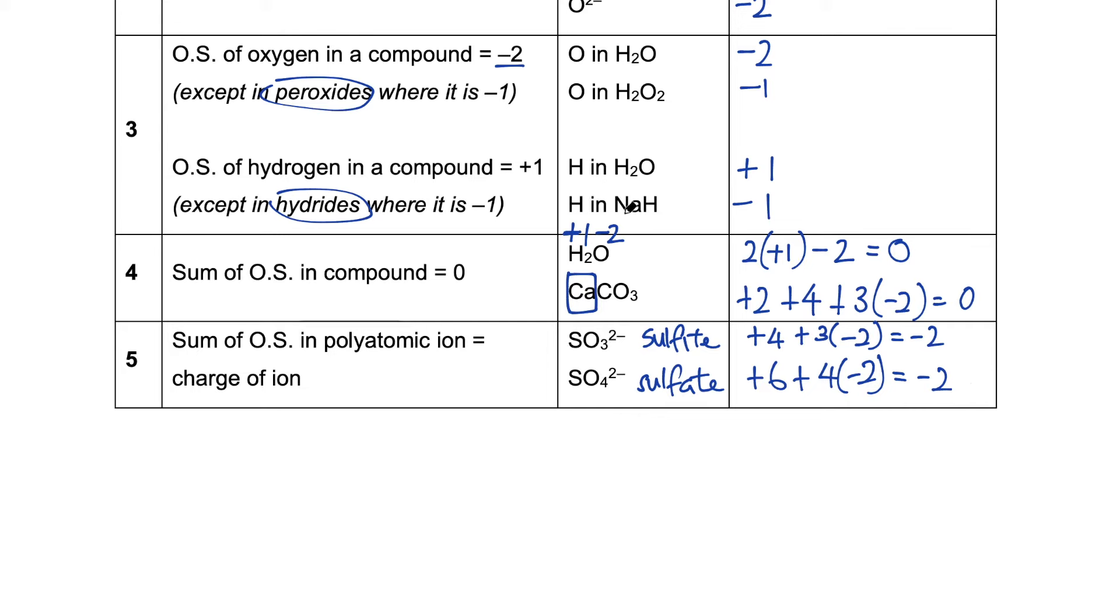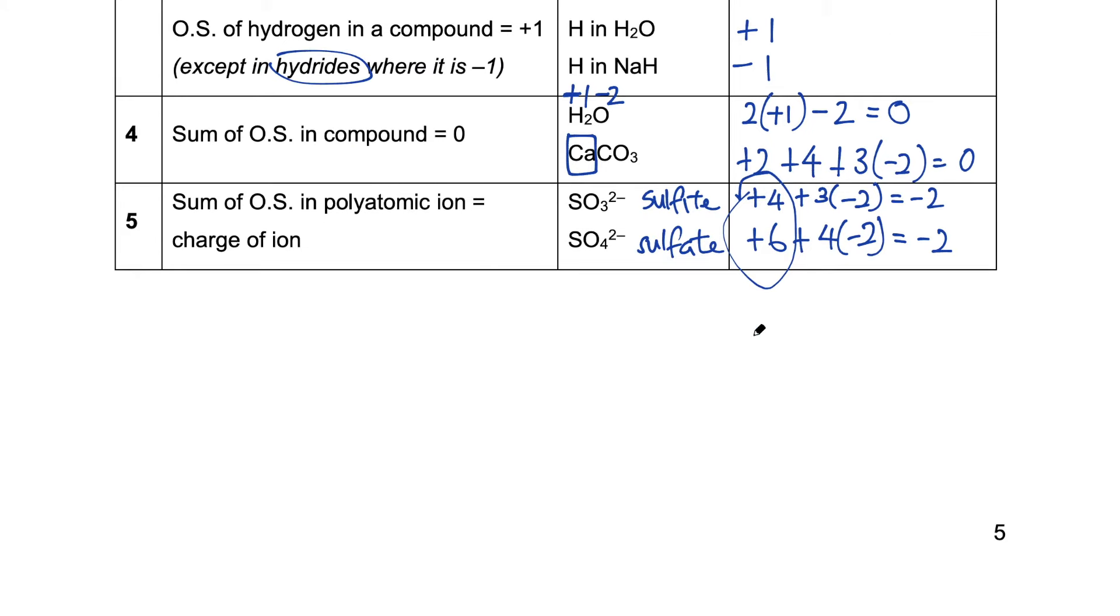Now you may ask me, how did I know whether this is plus four or plus six in the first place? Well, we can calculate. If I were to give you a polyatomic ion in which you do not know the oxidation state of an element, we can let it be x. We know for oxygen, the oxidation state is minus two. We can then construct an equation x plus four times minus two equals to the charge. And we can solve for x. So these are the basic rules of how to calculate oxidation states.